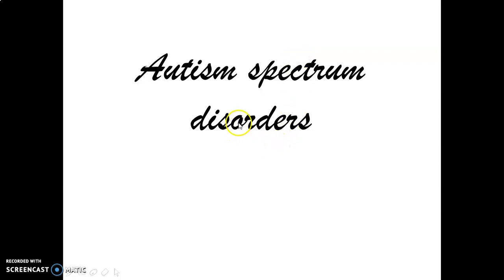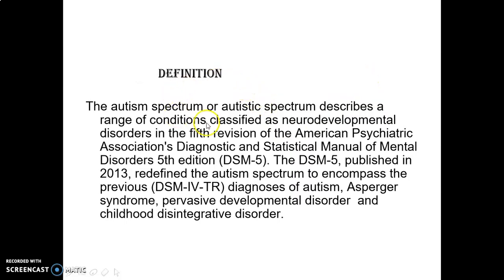Good morning dear students. Today we are starting a new topic which is a disorder commonly seen in children in neuropathology. The topic is Autism Spectrum Disorders. The autism spectrum means we are not talking about a particular single condition — it is a spectrum of disorders, many disorders combined together, commonly called ASD. ASD describes a range of conditions classified as neurodevelopmental disorders in the DSM-5, the fifth edition of the American Psychiatric Association's Diagnostic and Statistical Manual of Mental Disorders.